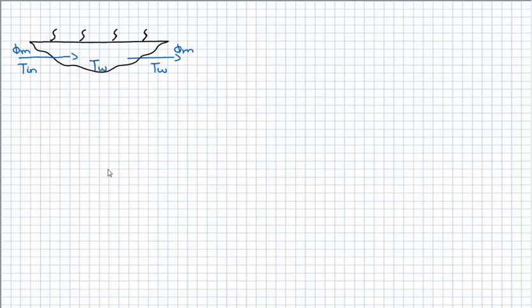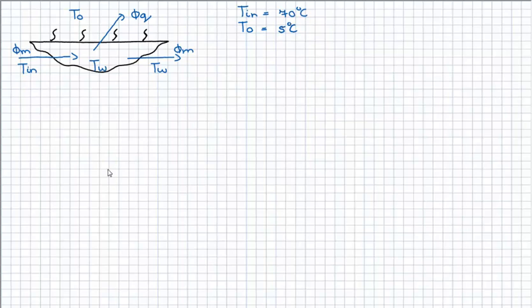The water coming in has a temperature of T_in, and flowing out has a temperature of T_w. We assume that the bath is ideally mixed, and therefore the water inside the bath is also T_w, which stands for T water. The outside temperature is called T_outside, and there is also a heat flow Vq going from the water inside the bath to the outside.